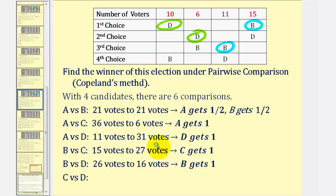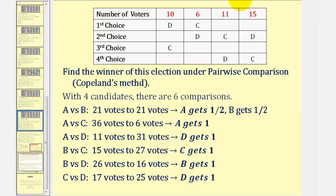For the last comparison of C and D, we'll remove A and B from the table. C is preferred here and here, so C receives seventeen votes. And D is preferred here and here, so D gets twenty-five votes. D wins and D gets one point.